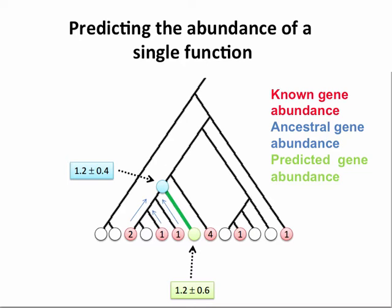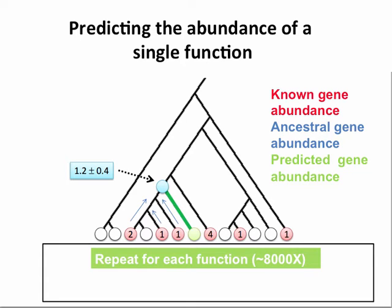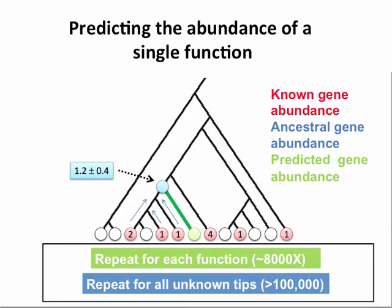That's for one function and one tip in the tree. We compute that and repeat for all functions — we usually use KEGG orthologs, and there are around 10,000 of those functions. We repeat over and over for that one tip, and we pre-compute it for all tips in the tree at 97% for GreenGenes. This gives us a predicted functional profile for every single tip in the tree.